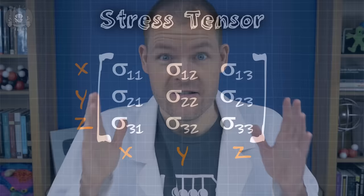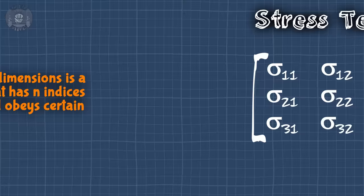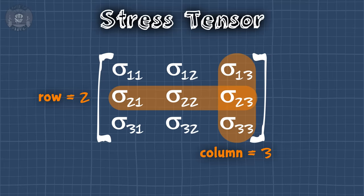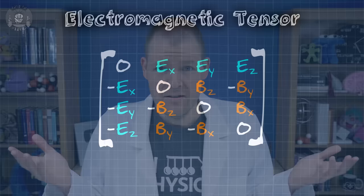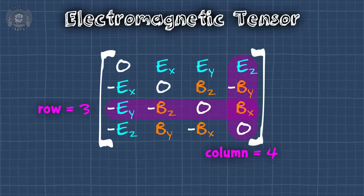Rank is the amount of information you need to find a specific component. In this case we only need a row and a column — two pieces of information — so we say the tensor is rank 2. The stress tensor is rank 2 and dimension 3. Matrix notation is pretty convenient for rank 2 tensors of any dimension. With the electromagnetic field tensor, you still only need a row and a column to find a specific component, so it's rank 2. However, there are four rows and four columns, which means this tensor is four-dimensional. The electromagnetic field tensor is rank 2 and dimension 4.